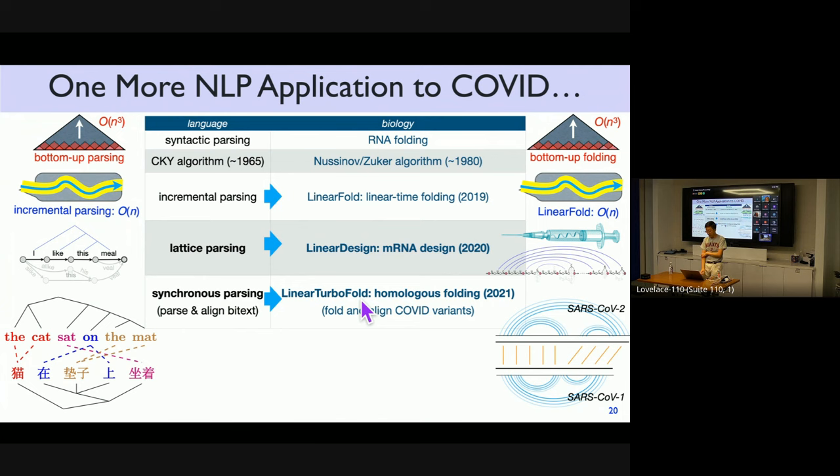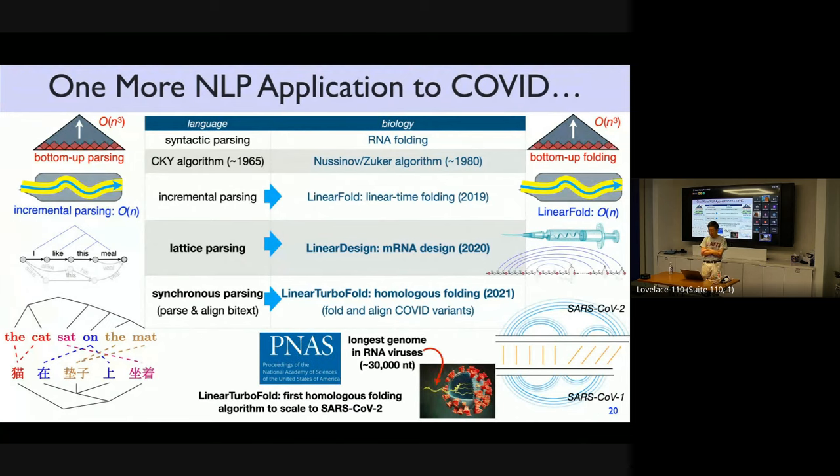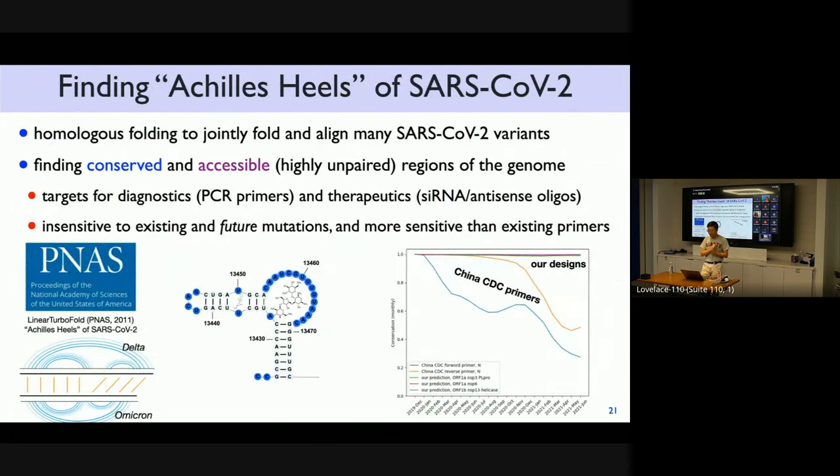And this idea has application in COVID as well. That is called homologous folding. Homologous folding is like fold and align. And by the way, fold is just parse. So parse and align becomes fold and align different COVID variants and different coronaviruses. So you can fold and align SARS-CoV-2 with SARS-CoV-1 or fold and align Delta with Omicron. And that's a very interesting paper that we published at PNAS, which is the first homologous folding algorithm to scale to COVID. Because COVID is the longest RNA virus known today. And we were able to do global structural analysis or global fold and align on full-length COVID genomes.